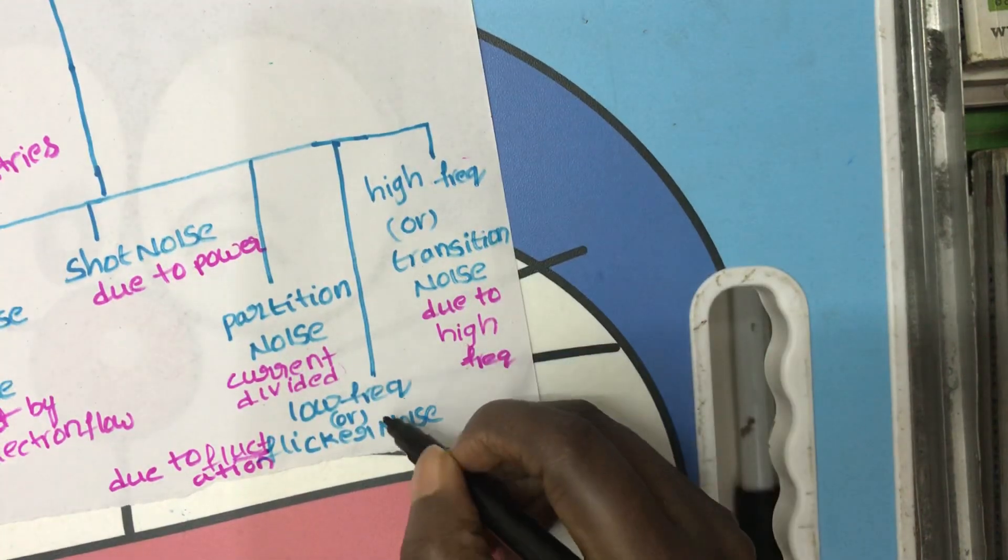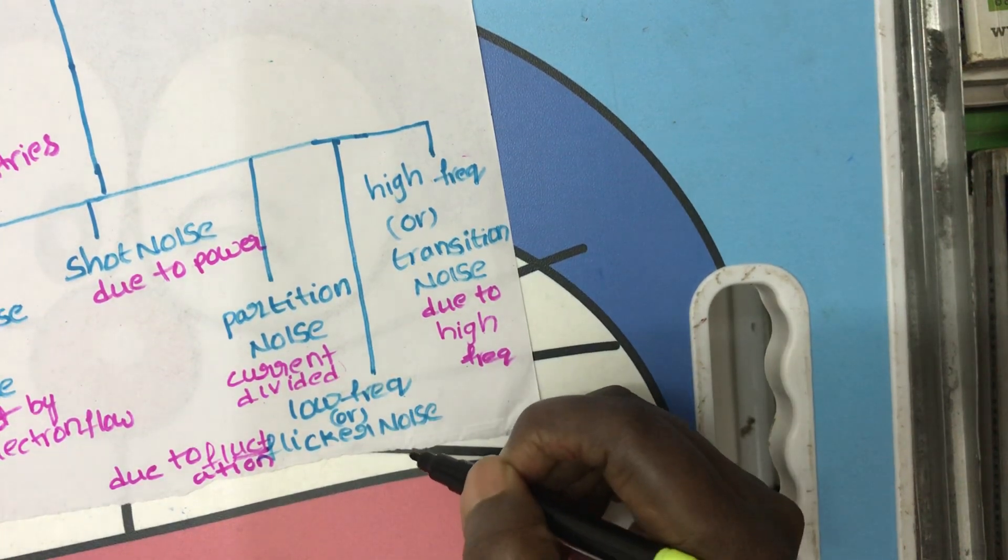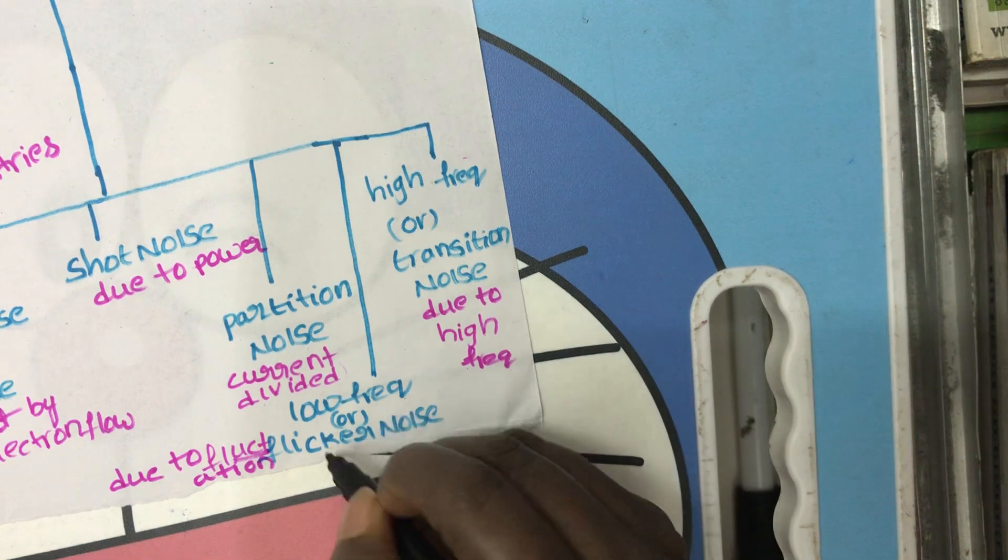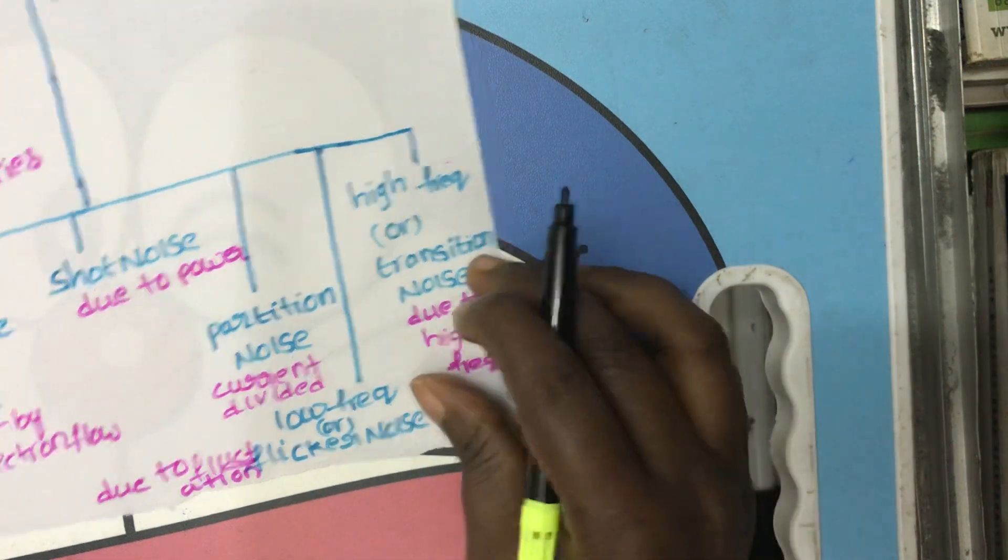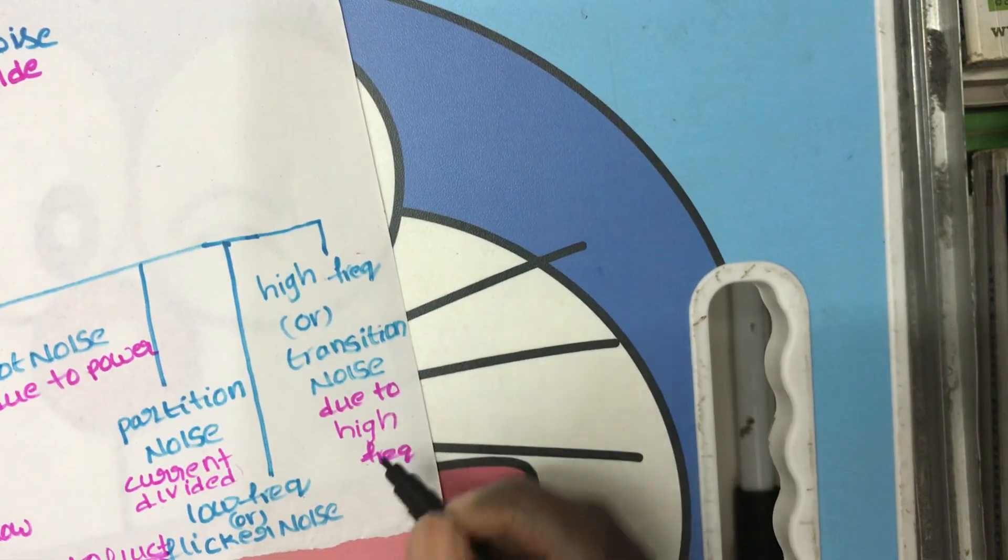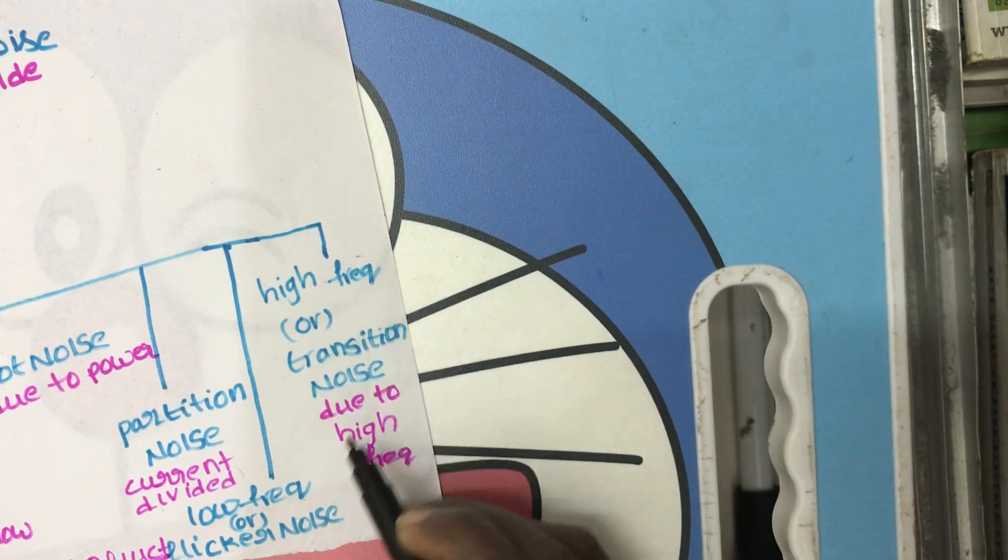Low frequency or flicker noise occurs due to fluctuations in current and voltage. High frequency or transition noise happens due to high frequency.